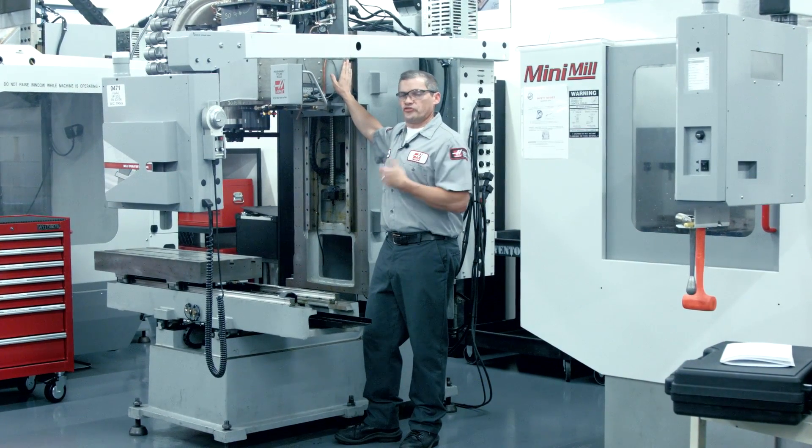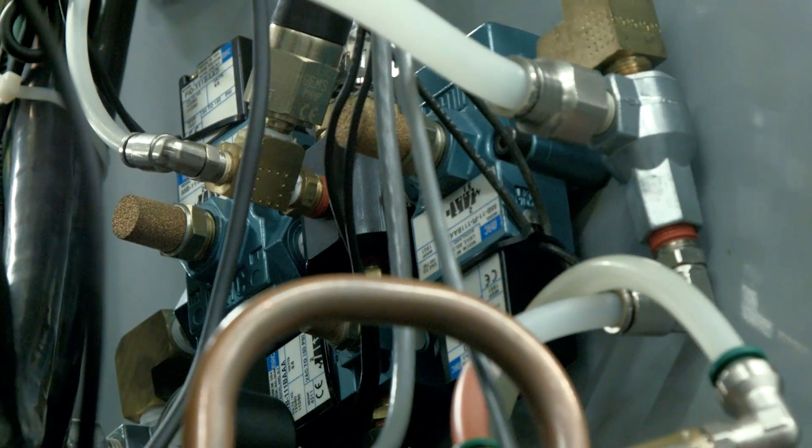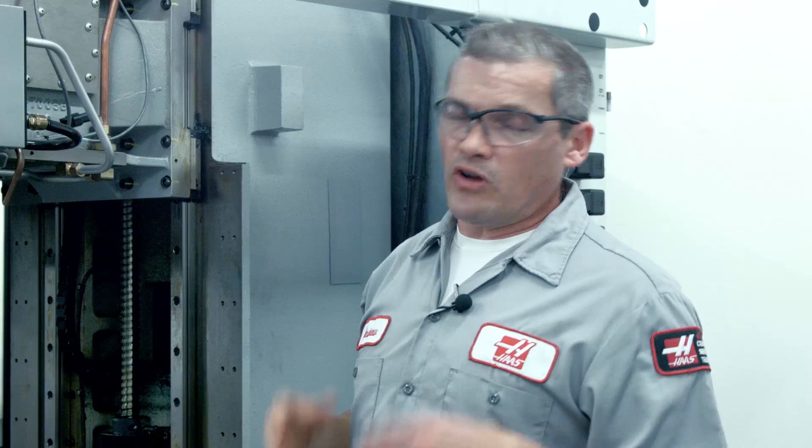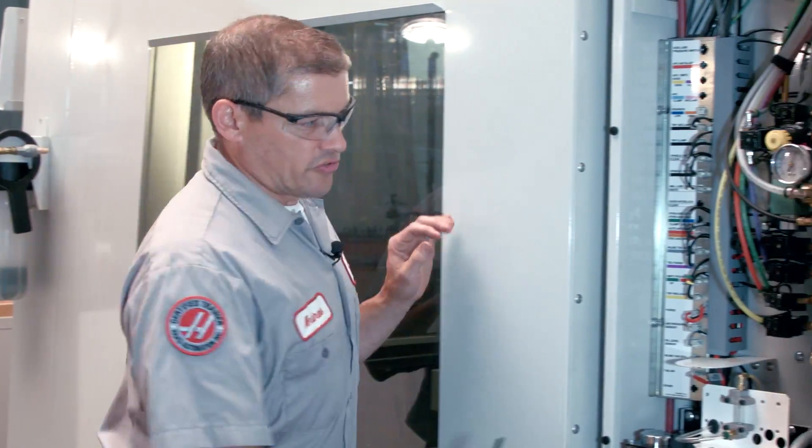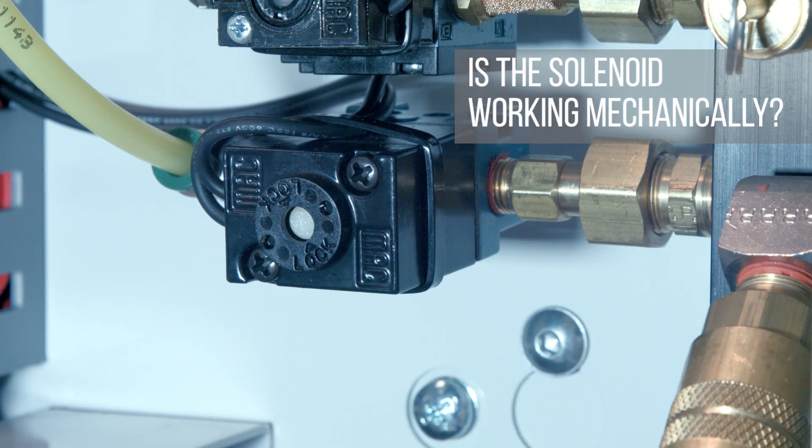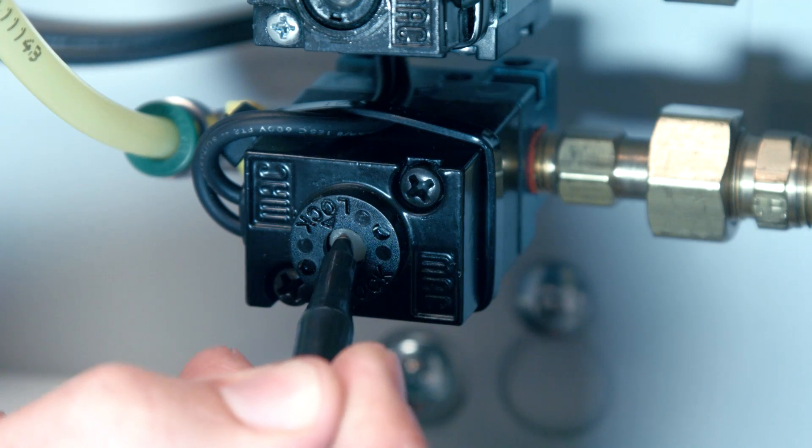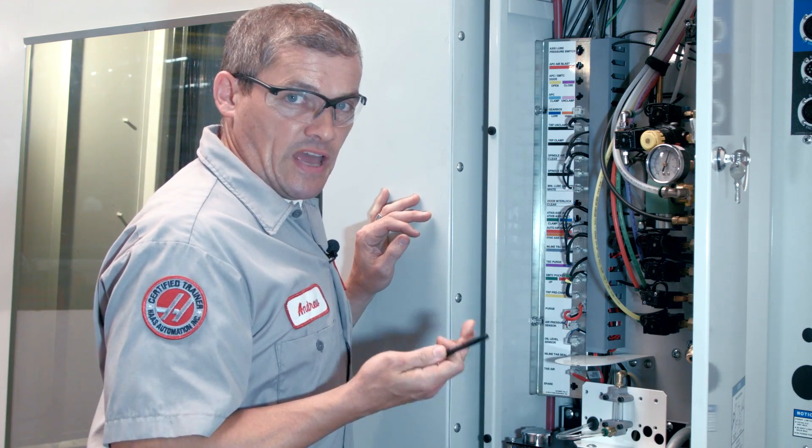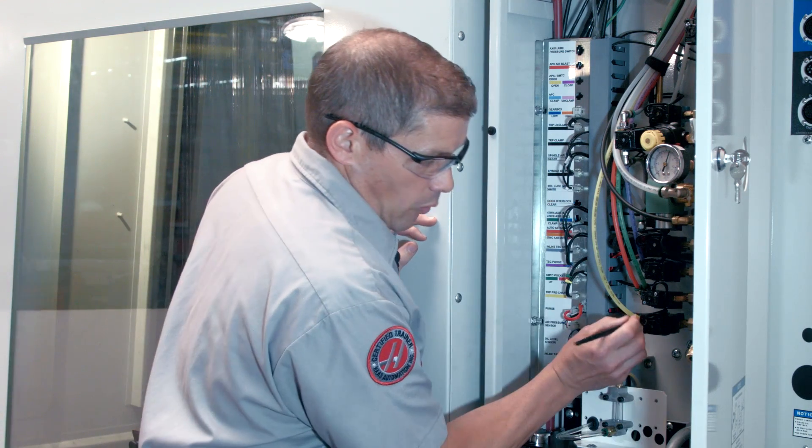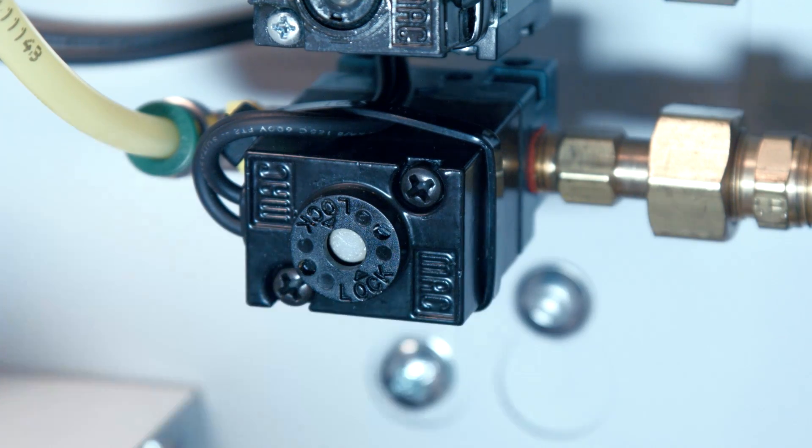So next we're going to move on to checking that this solenoid works correctly mechanically. If you're working in an older machine where the solenoids are not centrally located in the air lube panel, then you need to start by finding the solenoid that you need to test. Once you've correctly located that solenoid the rest of the troubleshooting process is just the same. So we need to check that the solenoid mechanism itself is functioning correctly. Now we'll do that by using the manual override button. When I depress this manually it moves the valve to the open position. And I can use a ballpoint pen or the round end of a hex wrench.